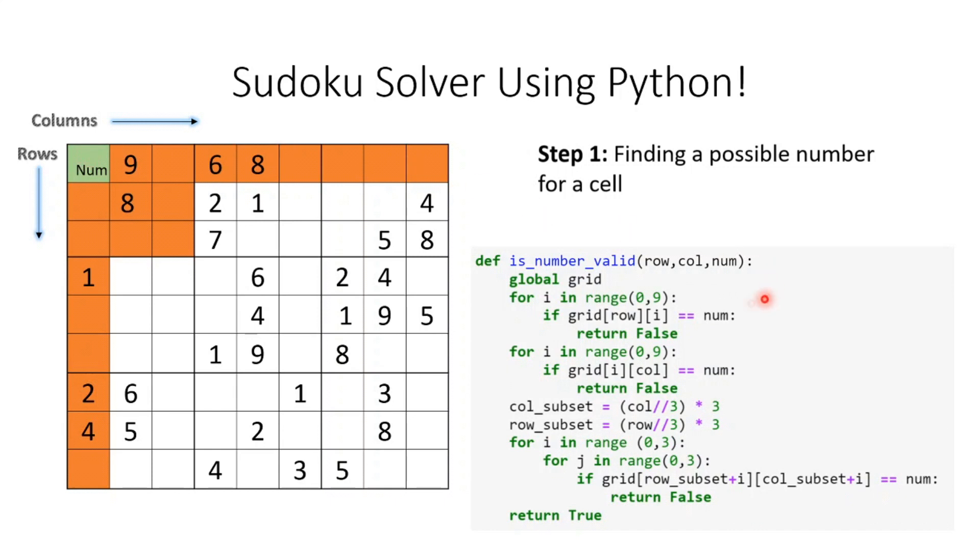The function looks like this: global grid is my input variable where I give the values of the Sudoku problem with null values and given numbers. I have three for loops. The first loop ranges from 0 to 9 and scans across the row to see if the number is available.